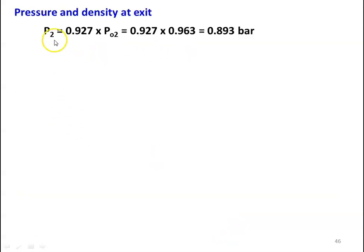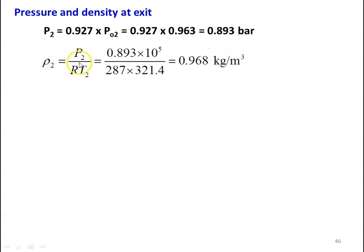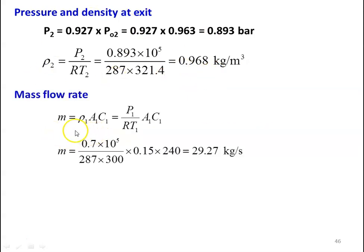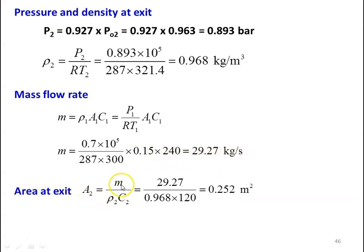Pressure and density at the exit: P2 equal to 0.927 into P02, which is 0.927 into 0.963, equal to 0.893 bar. Rho 2 equal to P2 by R T2, which is 0.893 into 10 power 5 divided by 287 into 321.4, equal to 0.968 kilograms per meter cube. Mass flow rate from inlet conditions: M equal to rho1 A1 C1, which is P1 by R T1 into A1 into C1. Substituting: 0.7 into 10 power 5 divided by 287 into 300 into 0.15 into 240, equal to 29.27 kilograms per second. Exit area A2 equal to mass flow rate divided by rho2 C2, which is 29.27 divided by 0.968 into 120, equal to 0.252 meter square.